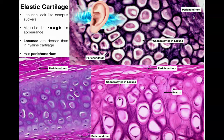Elastic cartilage is found in a few areas such as the ear and the epiglottis, which helps us swallow without letting food into the respiratory tract. The ear is a good place to know. A helpful mnemonic: epiglottis, ear, elastic — EEE.